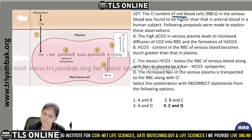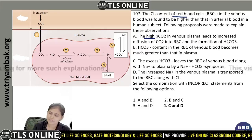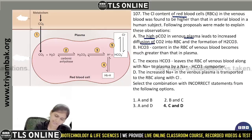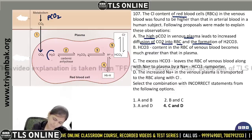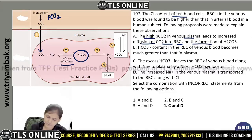The high partial pressure of carbon dioxide in venous plasma leads to increased diffusion of carbon dioxide into RBC. Where the partial pressure of carbon dioxide is higher, CO₂ moves into the RBC and forms carbonic acid (H₂CO₃), which in the presence of carbonic anhydrase converts into bicarbonate. So this statement is correct and true.